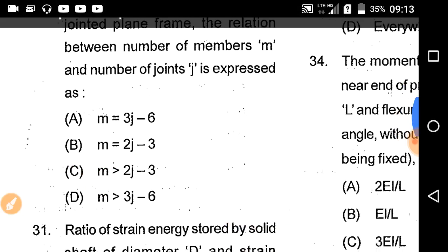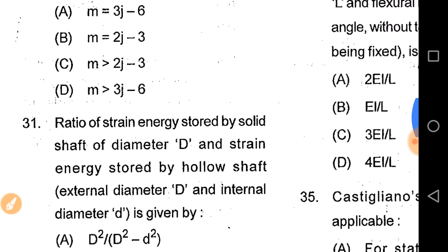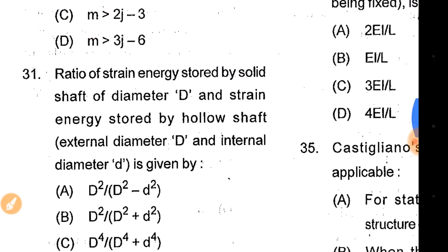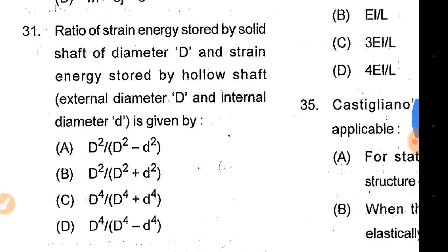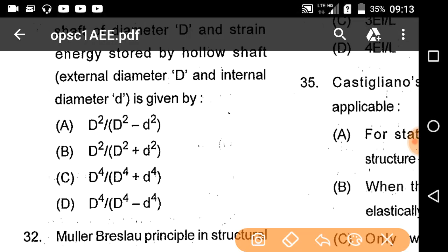The ratio of strain energy stored by a solid shaft of diameter D and strain energy stored by a hollow shaft of external diameter D and internal diameter D is given by option B — correct answer.